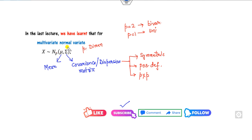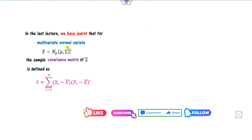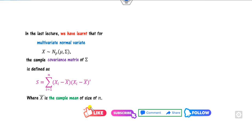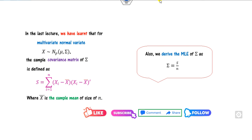Based on this multivariate normal variate, we defined the sample covariance matrix denoted by capital S, and x-bar is called the sample mean. We also defined the maximum likelihood estimator. The MLE of sigma is defined as S divided by n.